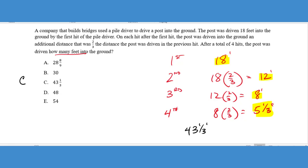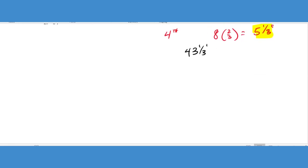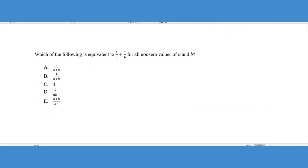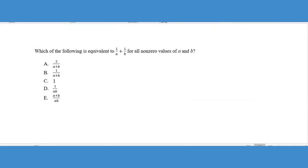And let's go to our last problem here. Our last problem is going to be more of a conceptual problem and testing your understanding of the way fractions work. So we can see here, it says, which of the following is equivalent to 1/a + 1/b for all non-zero values. So basically we're saying A cannot equal zero, B cannot equal zero.